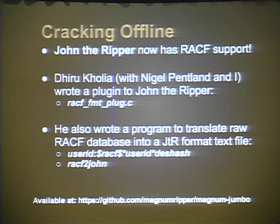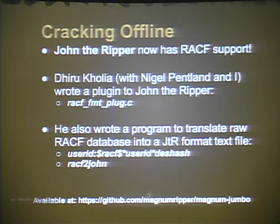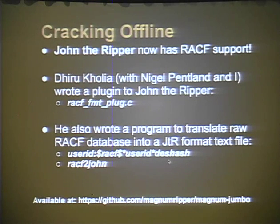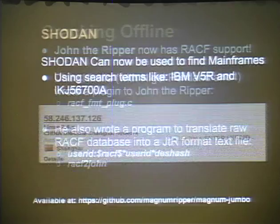For offline cracking: the RACF database contains password hashes. IBM publishes that it uses a one-way DES hash — your user ID is combined with your password using DES. Diru at Openwall wrote a plugin for John the Ripper that strips user IDs and hashes from a RACF database copy and cracks them. It's fast and available on GitHub, with links on my blog.